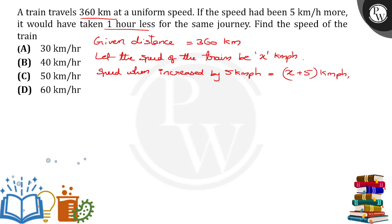The time taken when the speed is x km per hour is 360 by x. The time taken when the speed increases to x plus 5 is 360 by x plus 5. The time difference between these two is equal to 1.